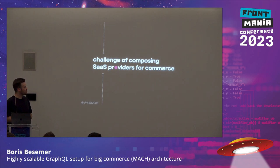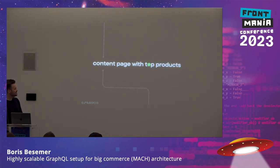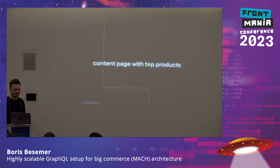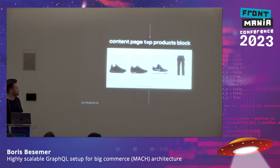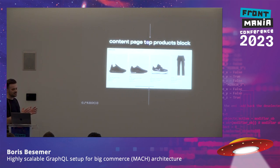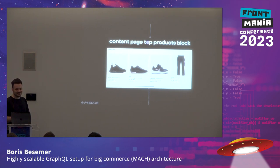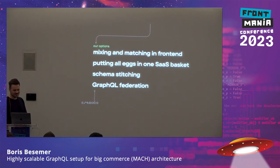We're going to talk about the challenge of composing those SaaS providers for commerce, using an example. You might often see a content page with a bunch of top products — a popular products section with a title and a set of products you want to show. What's interesting is that not all this information comes from one service — the title might come from a CMS while the product data comes from a commerce system. So how do you take both commerce and CMS data? There are four options I'll go through.